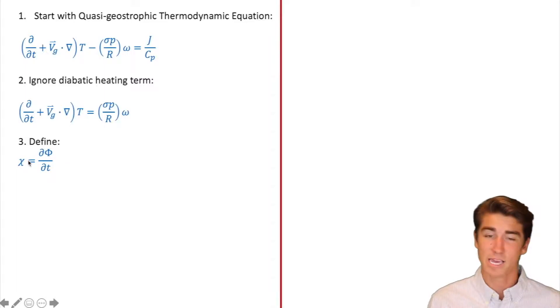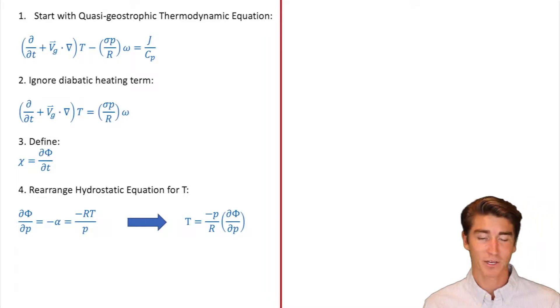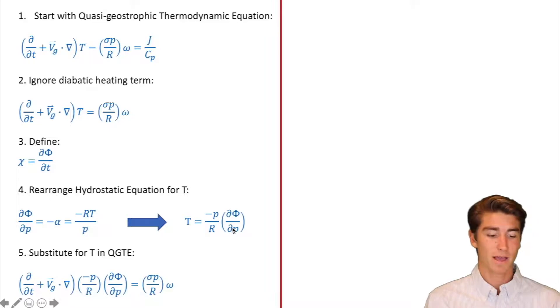Step three, we're going to define chi equals d phi dt. That might look familiar because we also do that in the tendency video. Step four, we're going to rearrange the hydrostatic equation for temperature. You can kind of ignore that middle term here. And then we want this T to be by itself. So the P is going to come up here with d phi, and the negative R is going to come down on the bottom with dP. Step five, we're going to substitute that in for temperature in the quasi-geostrophic thermodynamic equation. So in step two, you see we still have temperature there. Now we're going to sub that in for that temperature term. No other changes.